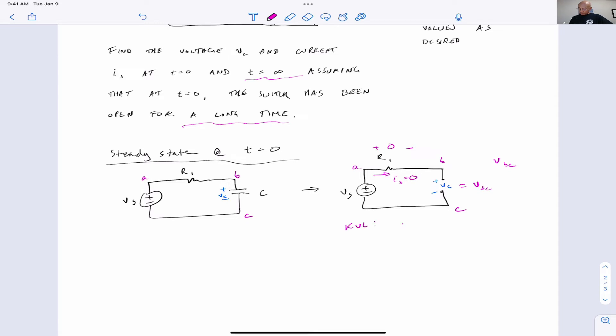Going around the loop in a clockwise direction, we have negative VS plus zero plus VC. That's equal to zero. So VC equals VS.